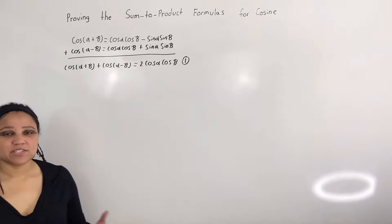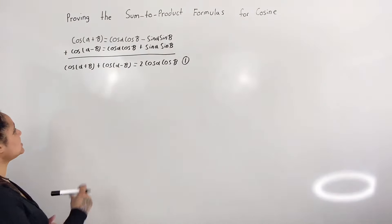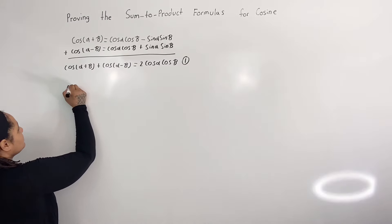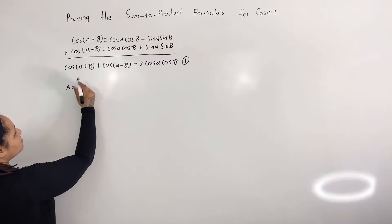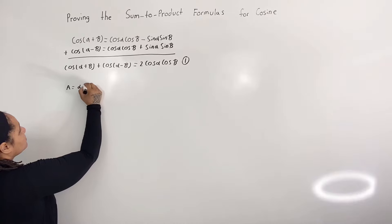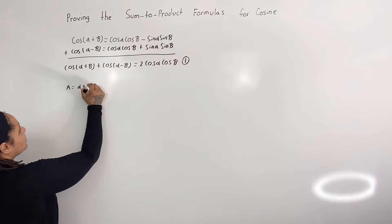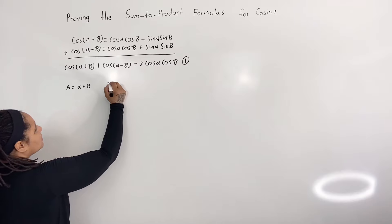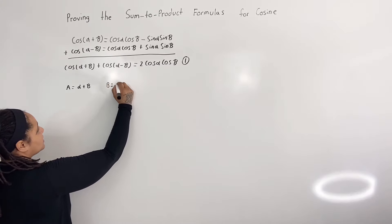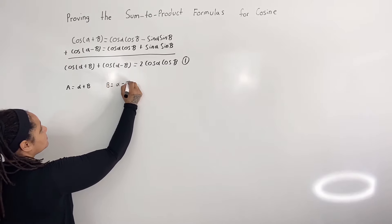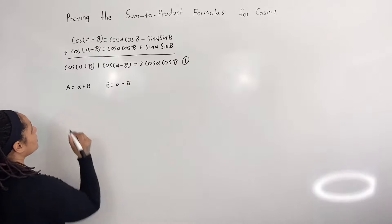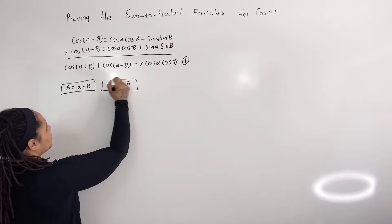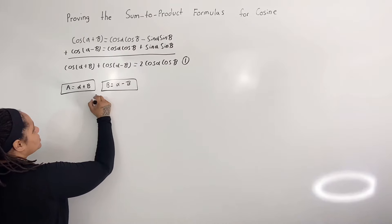Now I'm going to let a equal alpha plus beta, and I'm going to let b equal alpha minus beta. I'm going to call these two equations equations two.